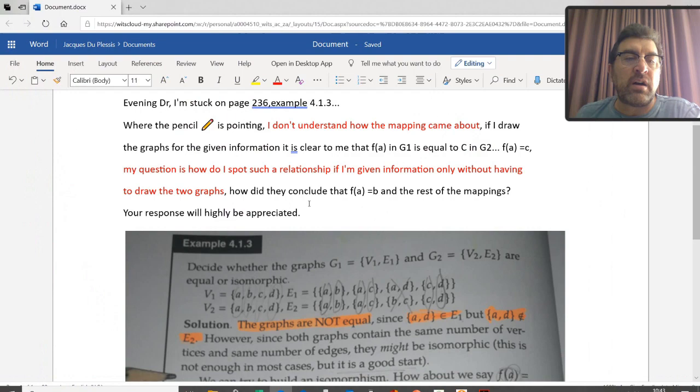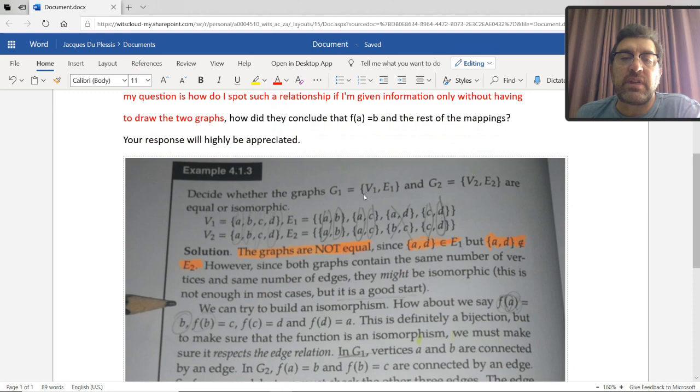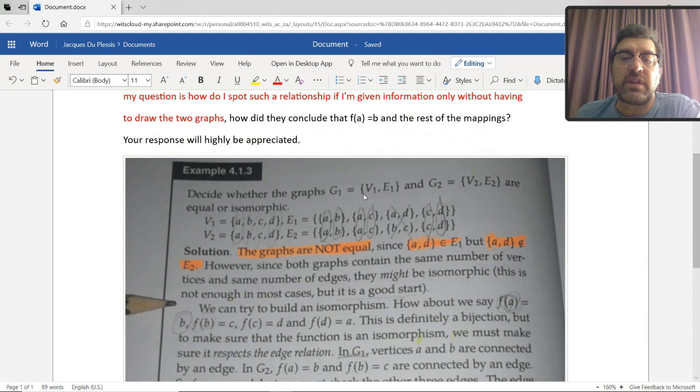So, Sonto, let's quickly revisit your initial question. Your initial question was asking, how do I spot such a relationship if given information only without having to draw the two graphs? Okay, so for equality, I hope it's clear to you that for equality, you do not have to draw the graphs. But for the isomorphism, it's going to be a little bit difficult if you just look at the theoretical component of what you've got. You have to absolutely draw these graphs. Your graphs are small enough. Draw them and investigate them the way we did. I hope that helps you, Sonto, and I hope that helps a few of you that had the same query as what Sonto had.